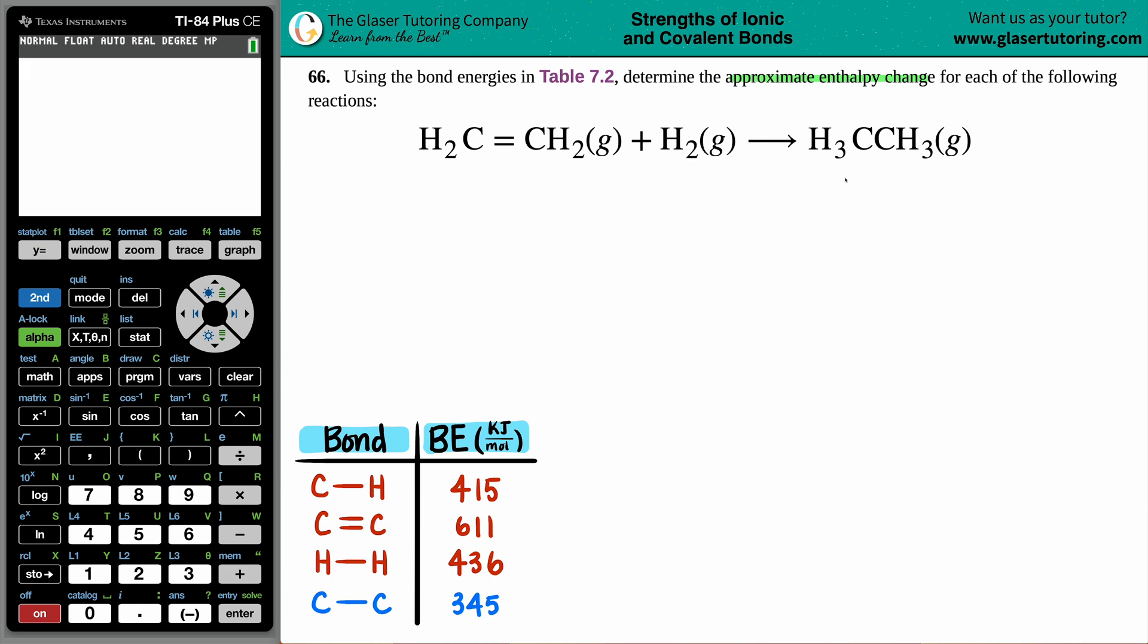We want to find the approximate enthalpy change. What is the enthalpy change? Well, anything in chemistry, physics, calculus—a change is always represented by this triangle, the delta sign. Change in enthalpy. There's an H in enthalpy, so this is delta H.